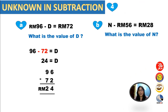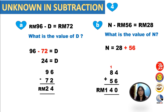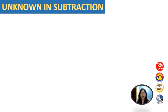Another example: N minus RM56 equals RM28. What is the value of N? N equals RM28 plus RM56, because N is supposed to be the biggest number. So N equals RM84.